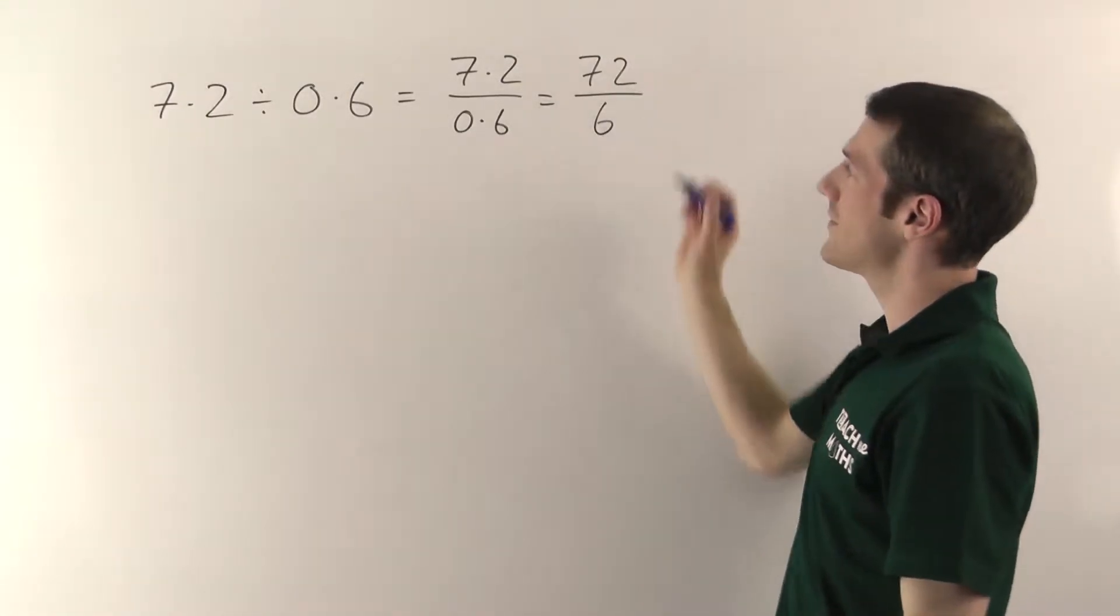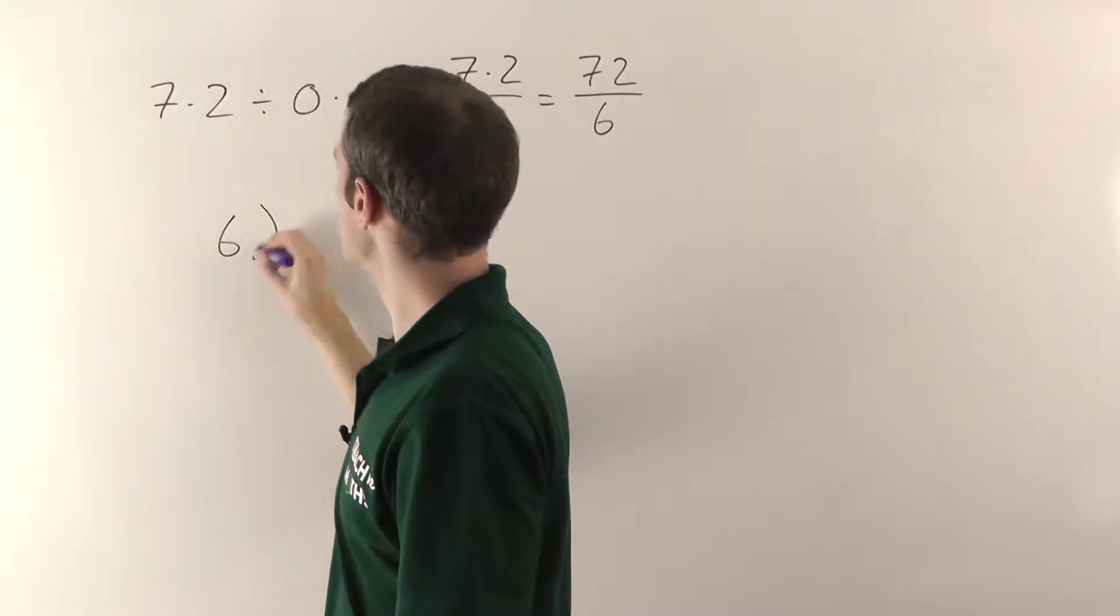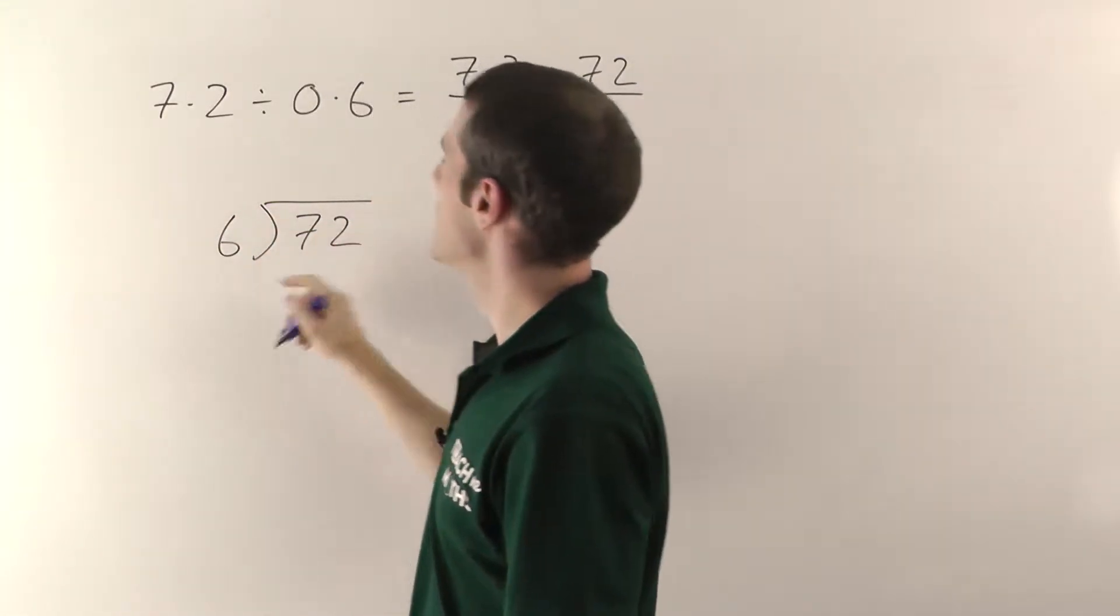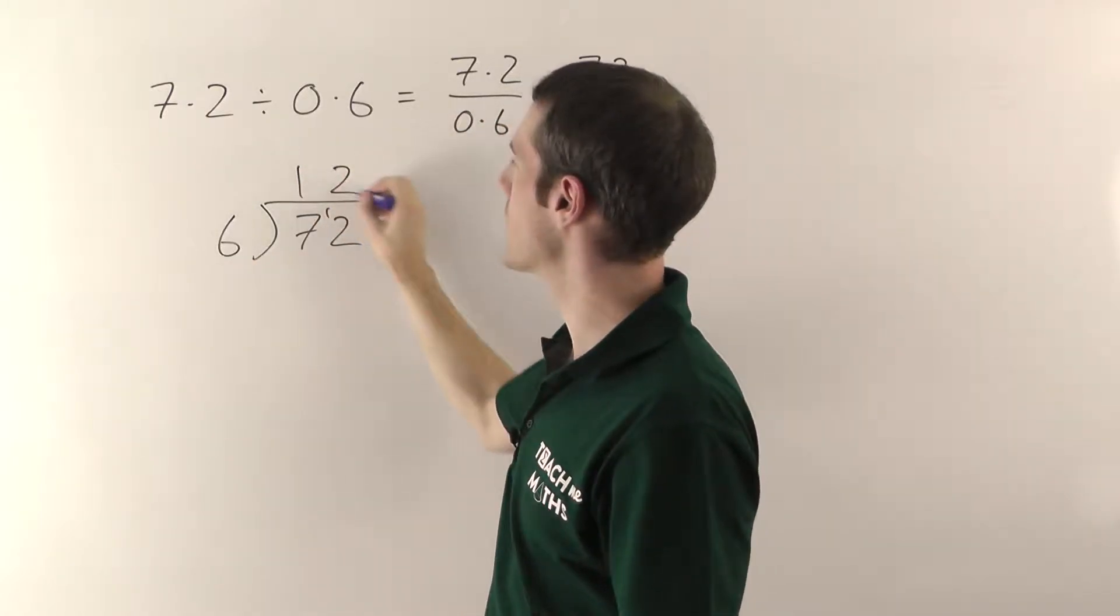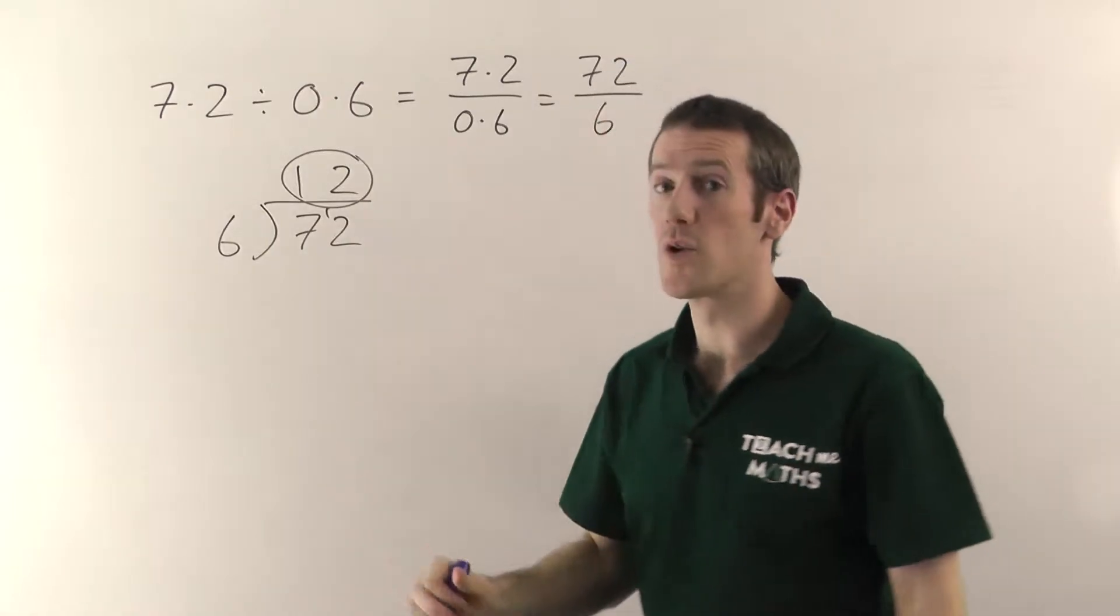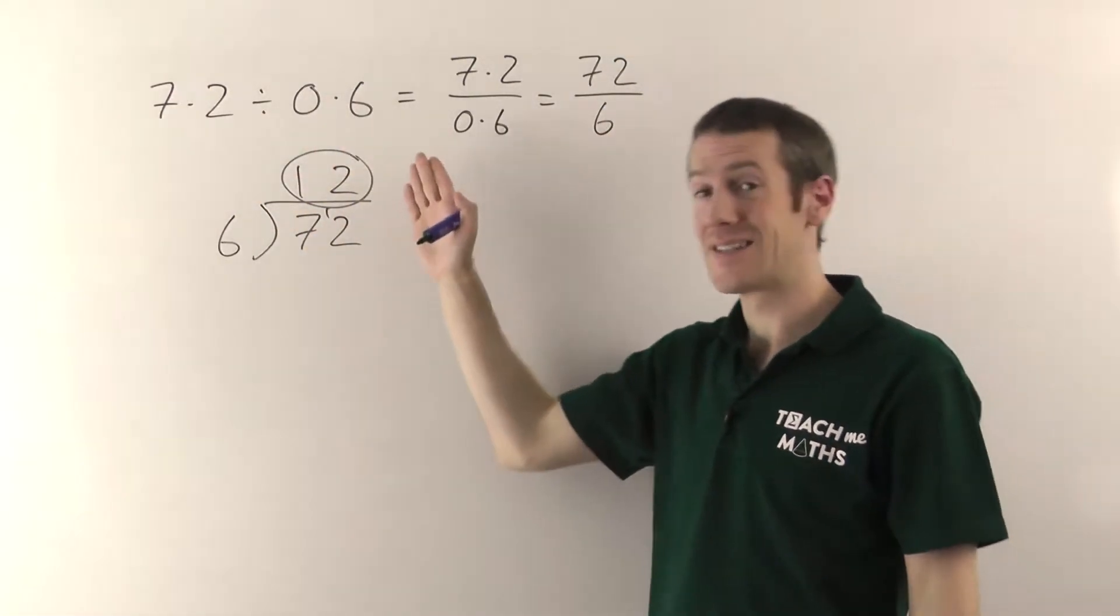We can do the division. So it's 72 divided by 6. You just do that in your usual way. So 6 into 72. 6 into 7 goes once, remainder 1, and 6 into 12 goes 2. So the answer here would be 12. 7.2 divided by 0.6 is 12.